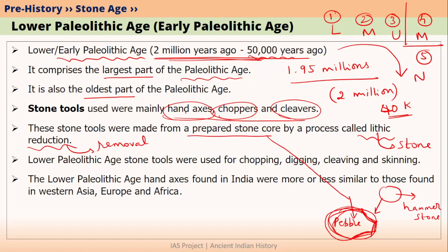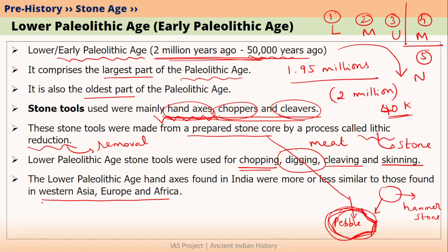These stone tools were mainly used for chopping and cleaving of meat, chopping of plants, skinning of animals, or digging of ground. Whatever type of hand axes were used by Lower Paleolithic people within the Indian subcontinent, they were more or less similar to those used in other parts of the world — like the hand axes used in Western Asia, Europe, and Africa.